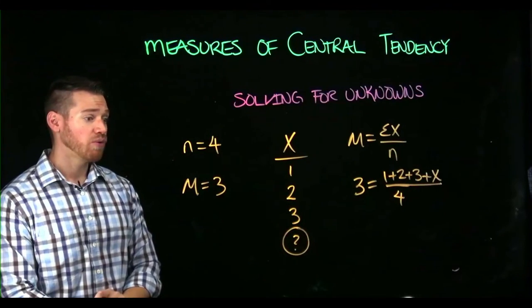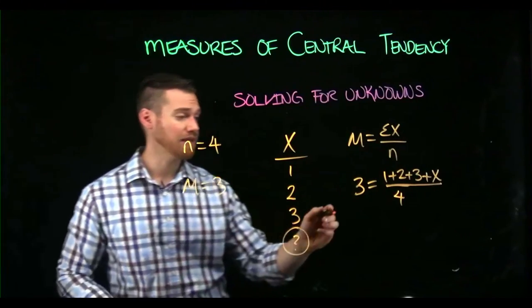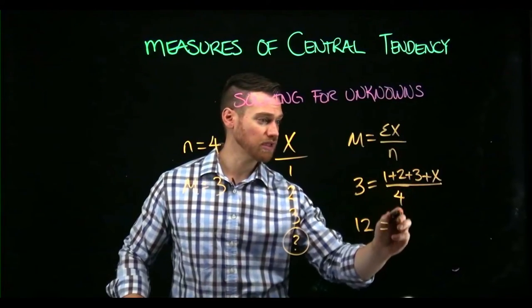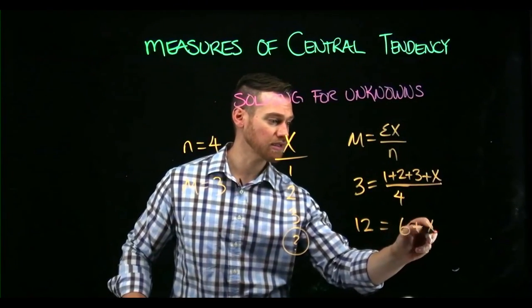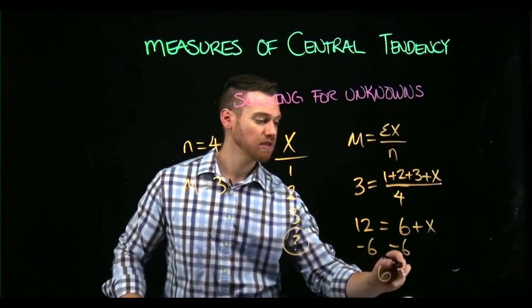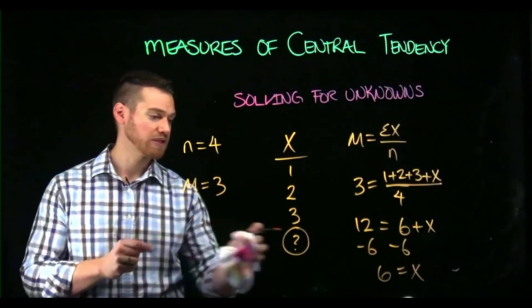Here we can solve for that missing value by isolating. We can multiply both sides and get 12 equals, we can put this together, six plus x. We can then subtract six from both sides and we get that our missing score must be six.